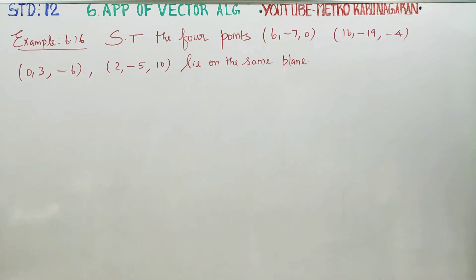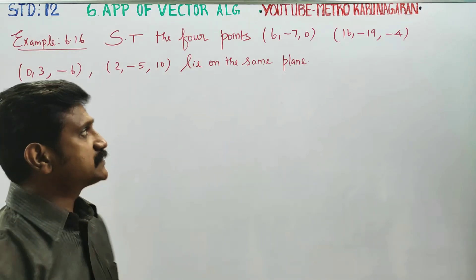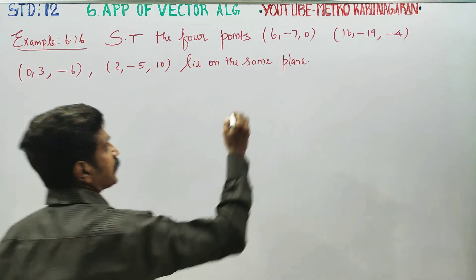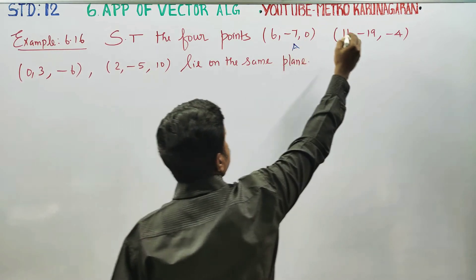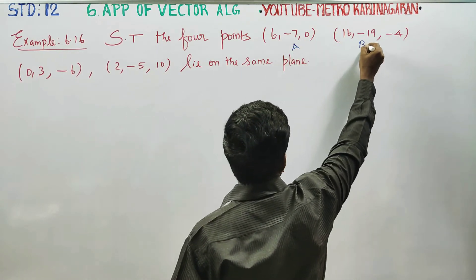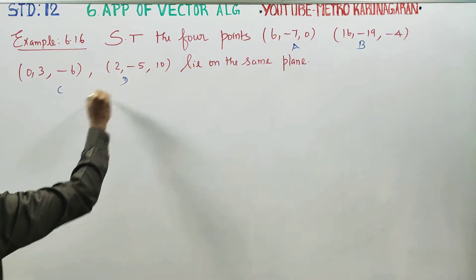Dear 12th standard students, I am Metro Karnagaran. In example 6.16, you have to show the points lie on the same plane. We can say this point is A, this is B point, this is C point, this is D point.